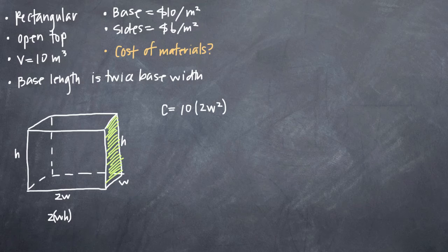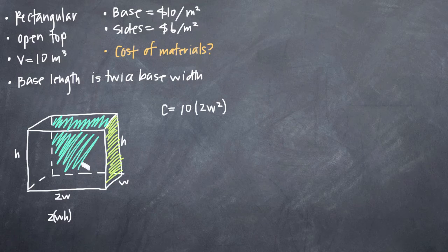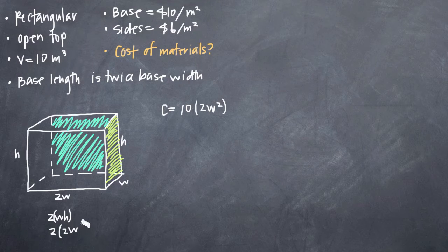The area of the other two sides, these ones here, is described by the length times the height, which is 2wh. And of course, we have two of those. So we'll say 2 times 2wh.